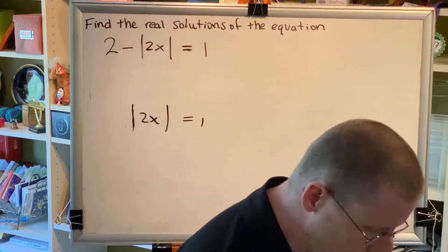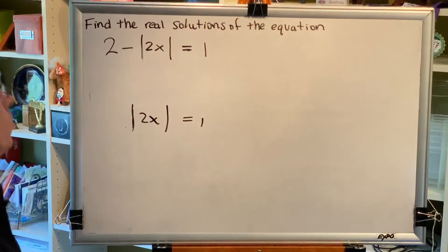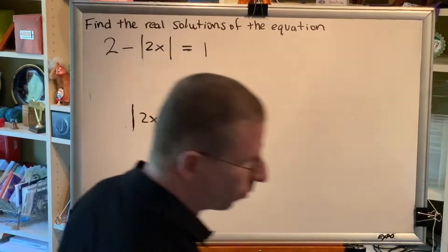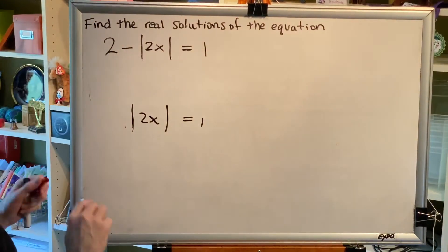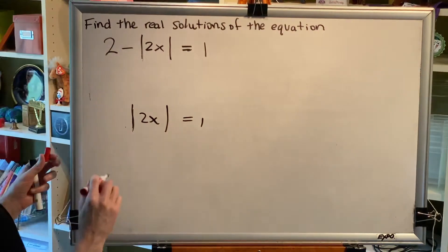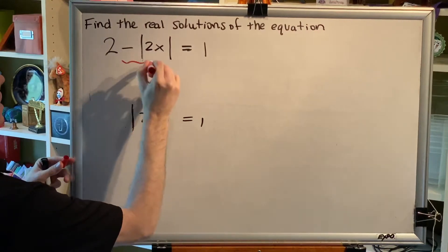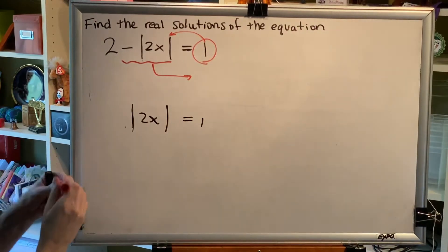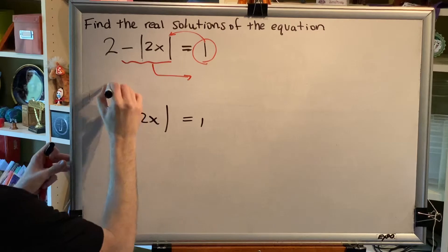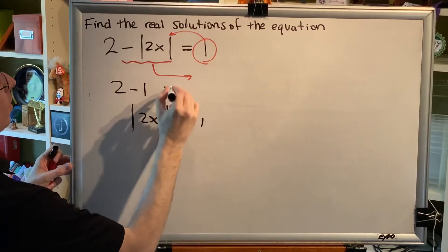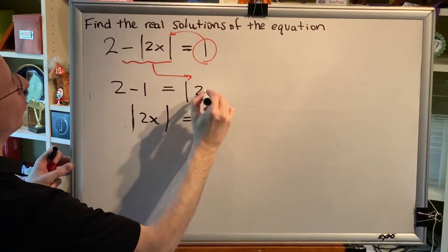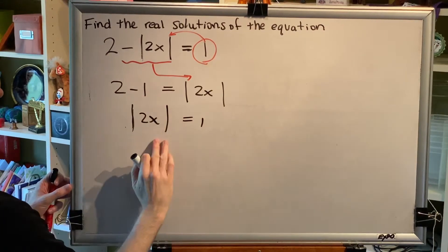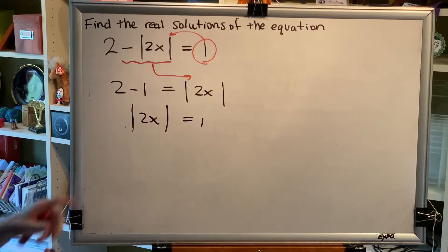This is a very useful way of thinking about algebra. A more procedural way is to say: I want terms with my variable on one side and terms without on the other. So if I move the pieces over, the result is 2 minus 1 equals the absolute value of 2x. Of course, 2 minus 1 is 1, so I get the absolute value of 2x equals 1, which is the same statement as before.